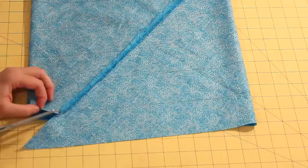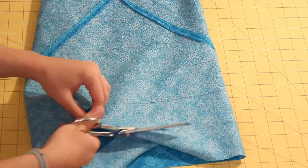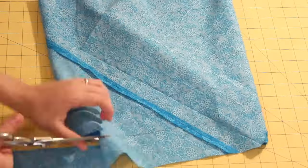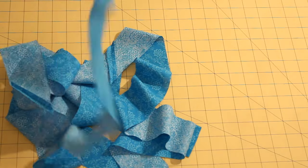So then iron the seam open. Use a pair of scissors to carefully cut on your drawn lines. You now should have one long bias strip of fabric.